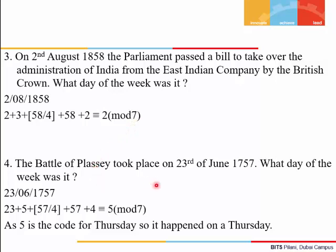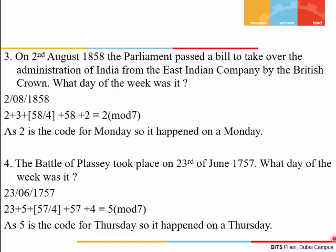Example 4: The Battle of Palasi was fought on 23rd June 1757. Since the year is in the 1700s, the correction is c = 4. Applying the formula, the whole sum is congruent to 5 mod 7. Since 5 is the code for Thursday, it was a Thursday.